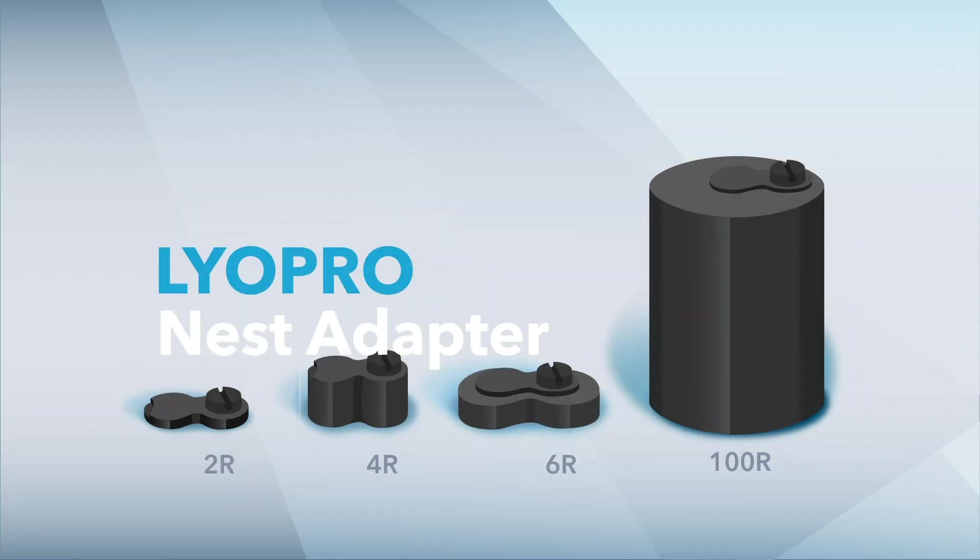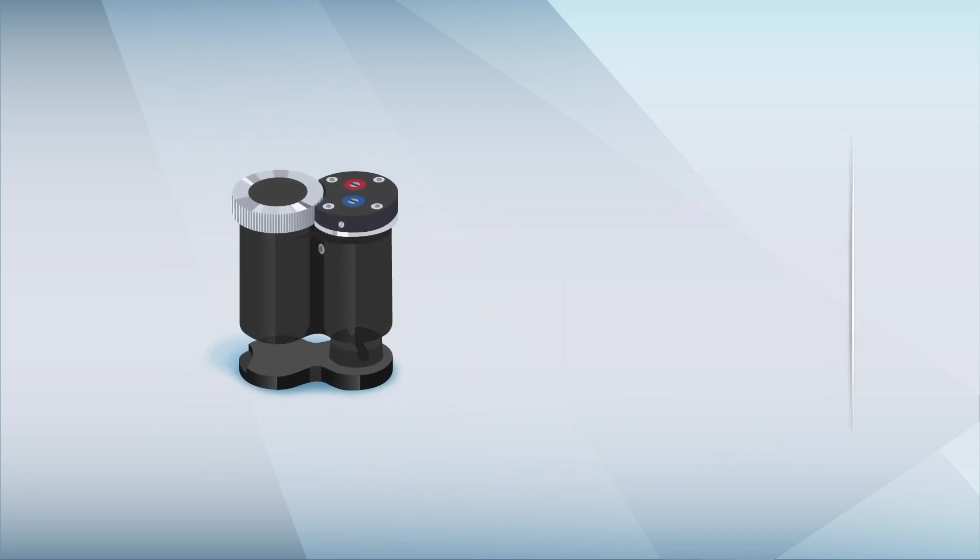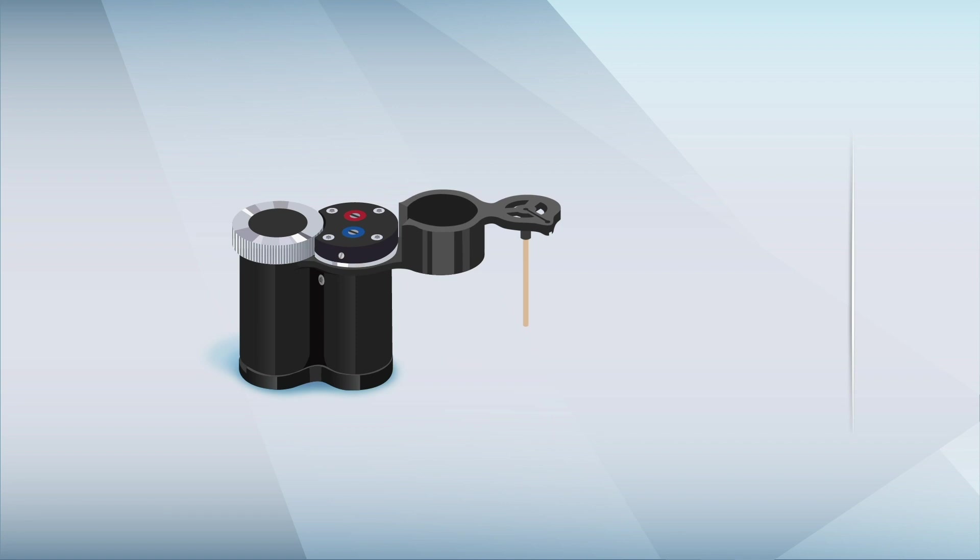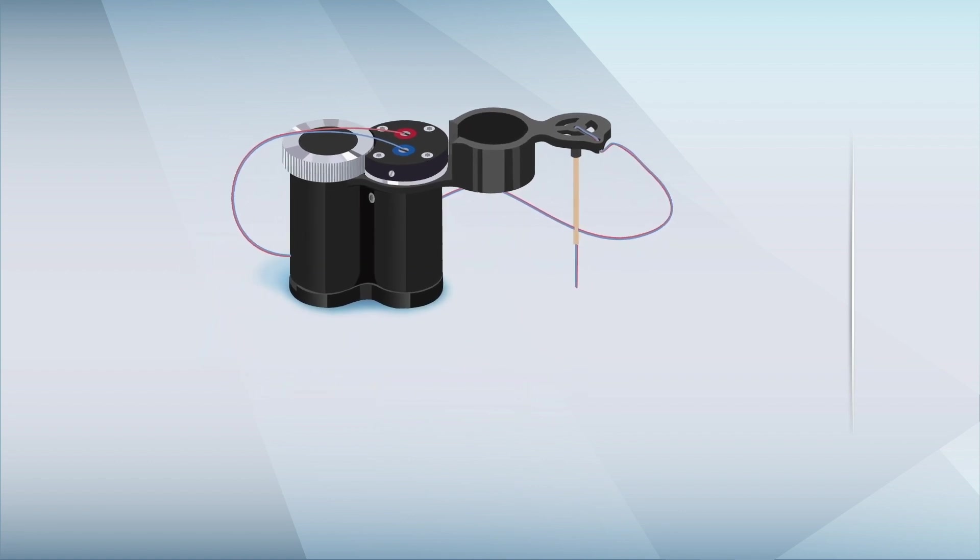You simply click the data logger to the correct logger nest to achieve the right height and diameter. Then connect your vial with the LiO Pro stopper clip and introduce the minimally invasive, user-replaceable thermocouple sensor into the stopper clip. It doesn't get any easier.